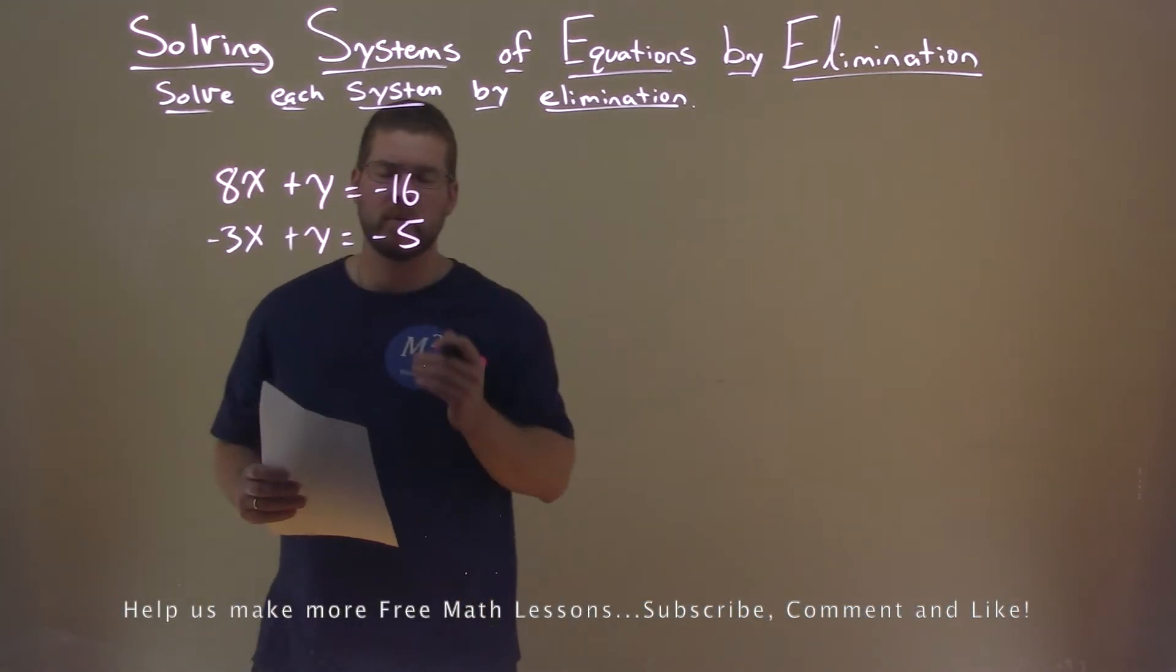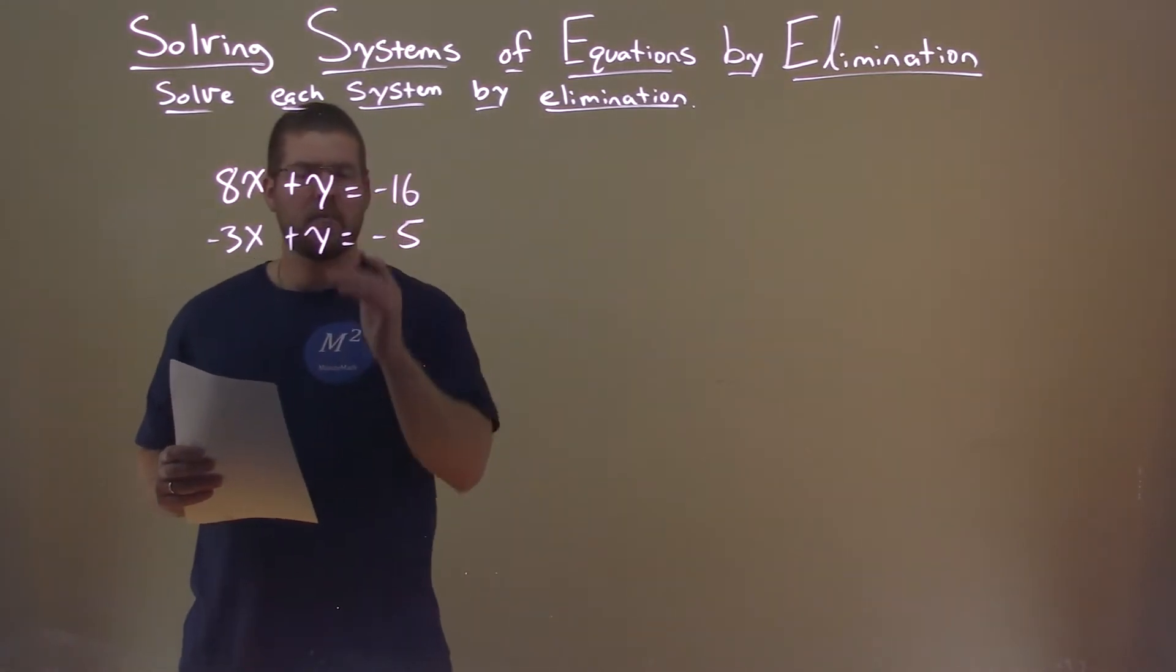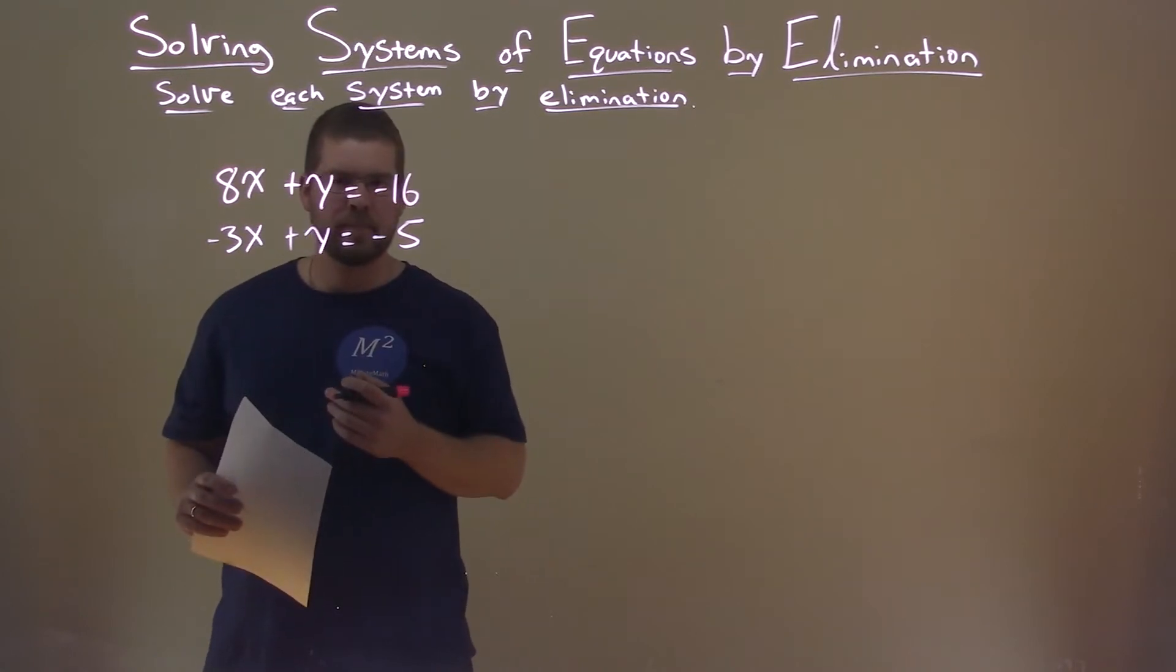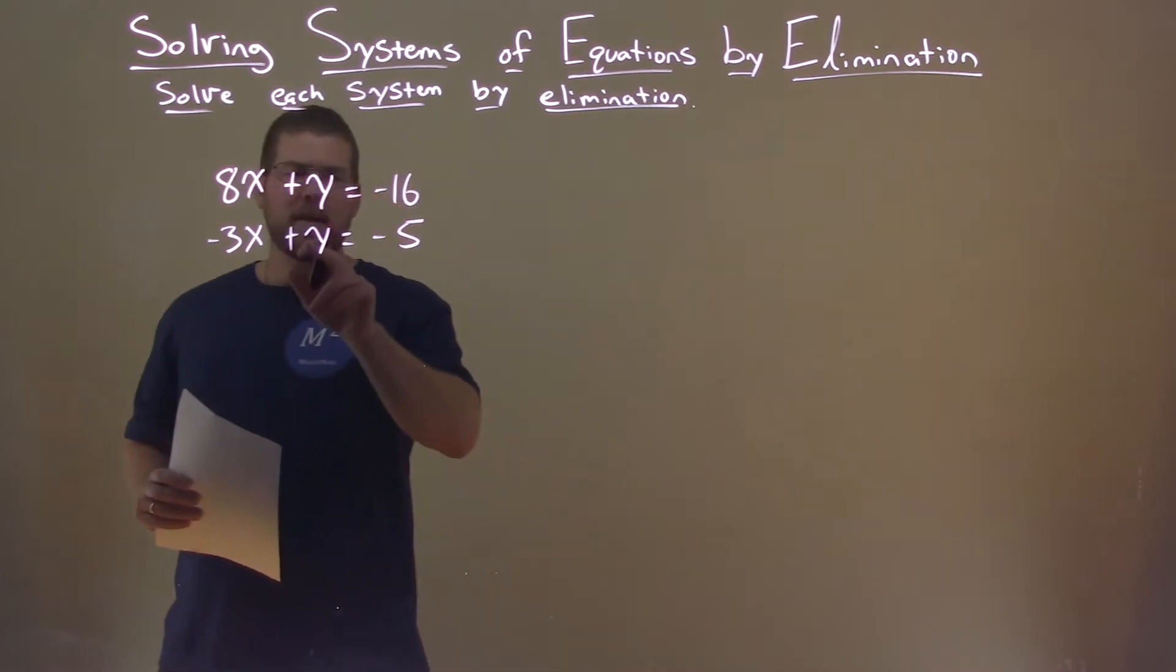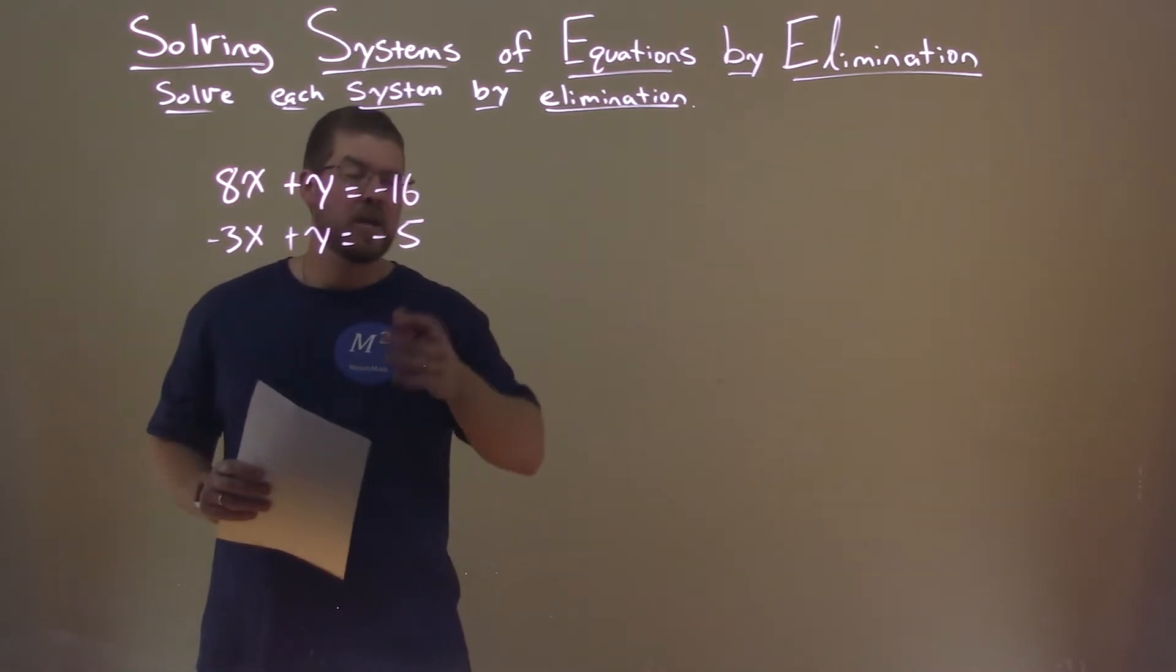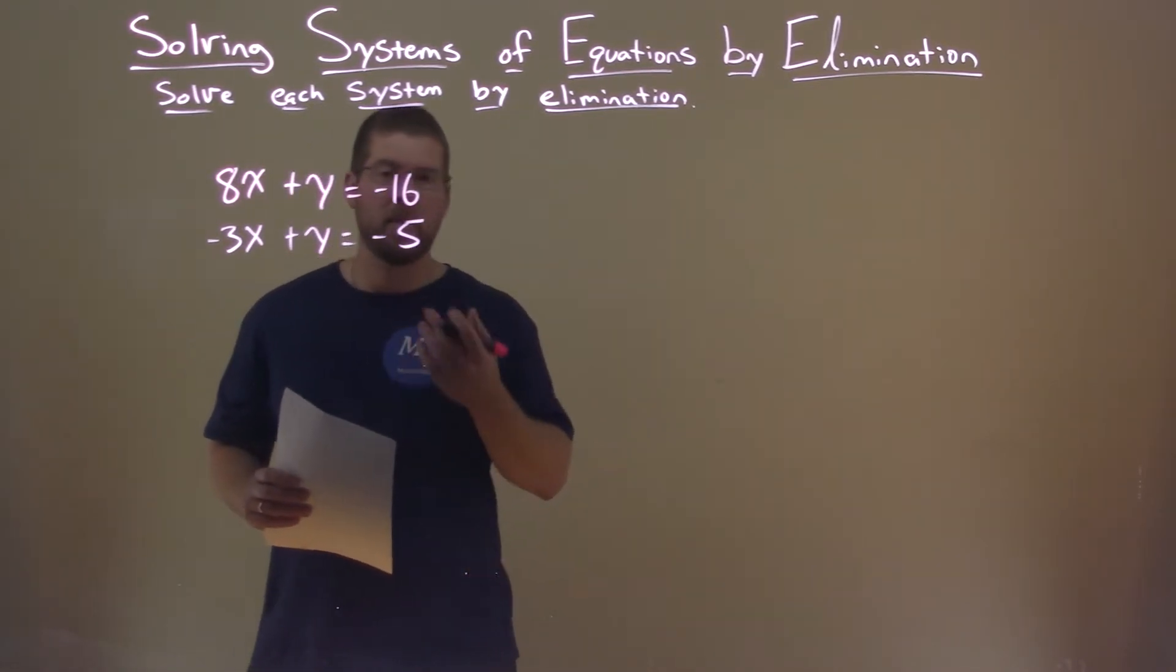I like to add my two equations here. Well, if I add them right now, nothing gets eliminated. Closest thing I can see is y and y right there. So if I can make that a negative y, I add them together, it will eliminate the y variable.